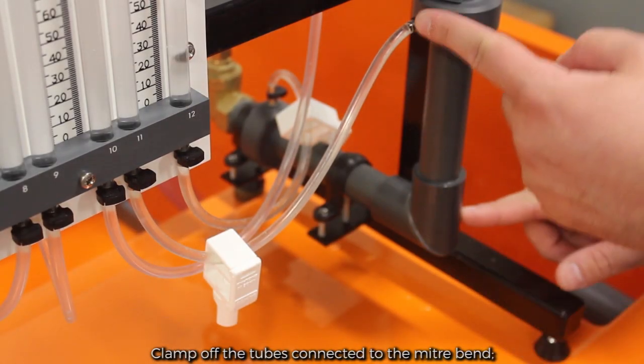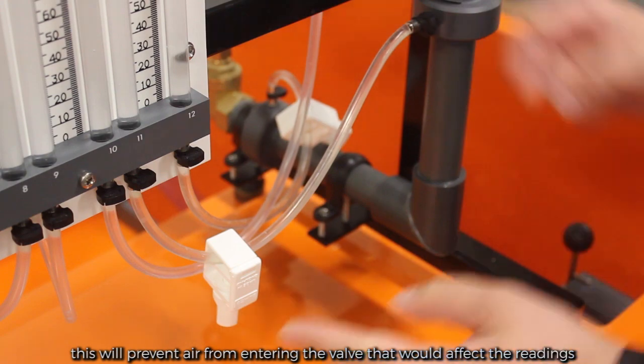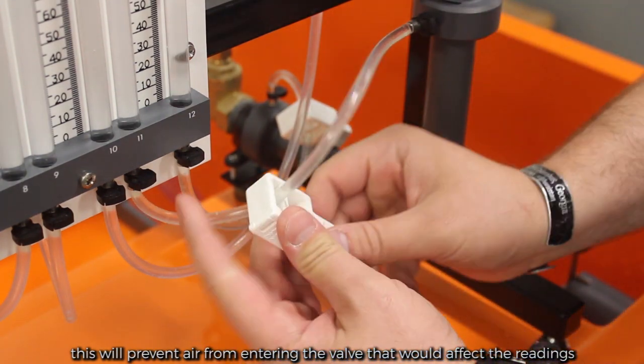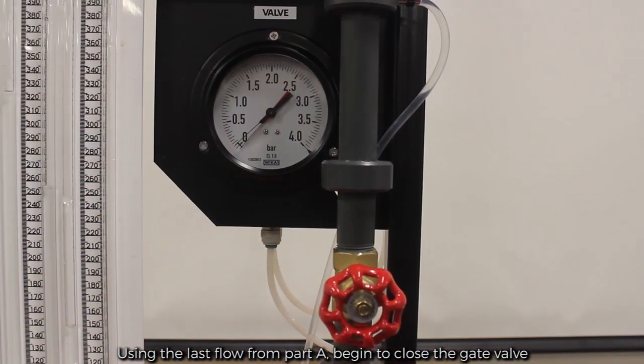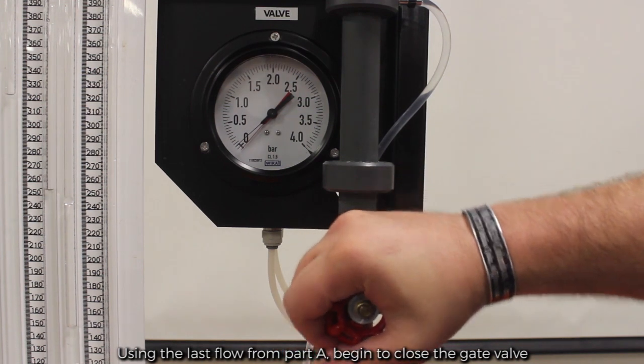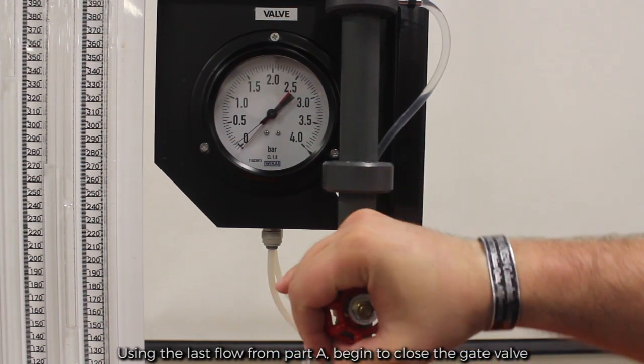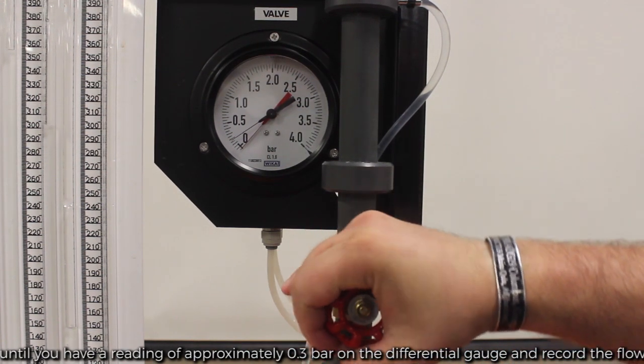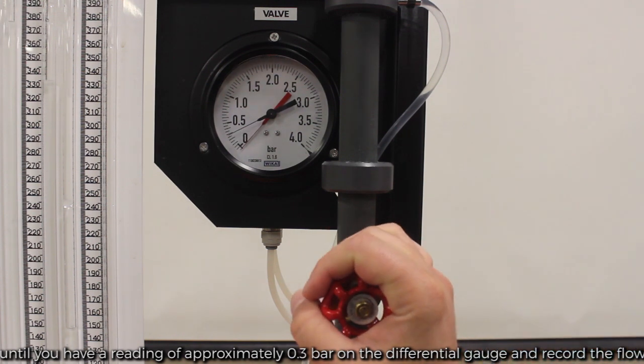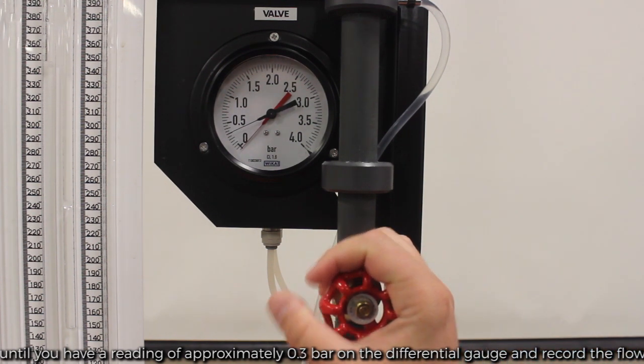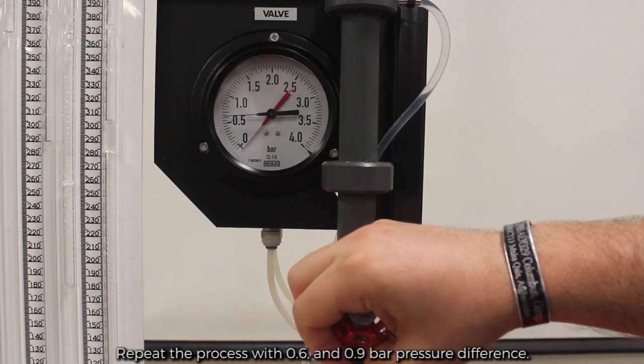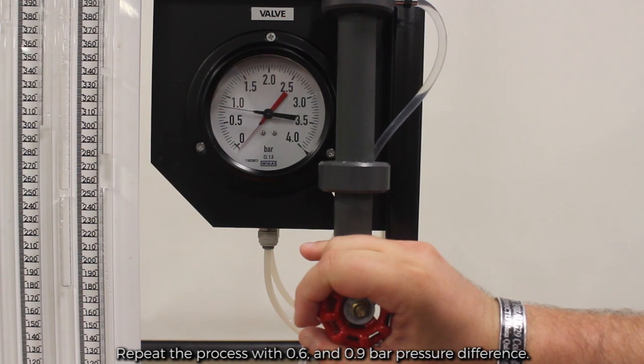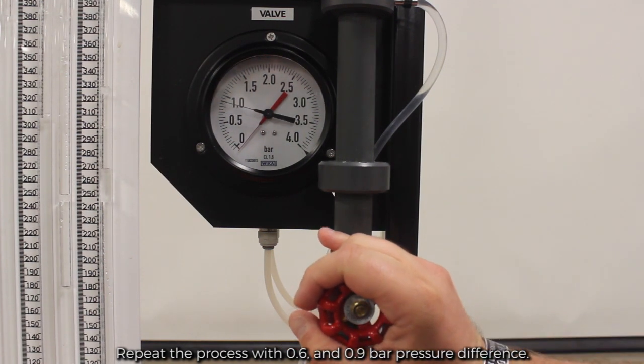Clamp all the tubes connected to the miter bin. This will prevent air from entering the valve that would affect the readings. Using the last flow from part A, begin to close the gate valve until you have a reading of approximately 0.3 bars on the differential gauge and record the flow. Repeat this process with 0.6 bar and 0.9 bar pressure difference.